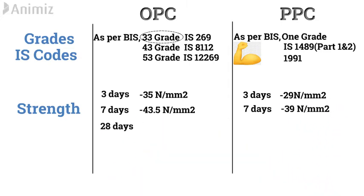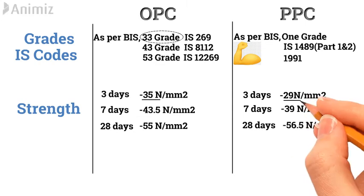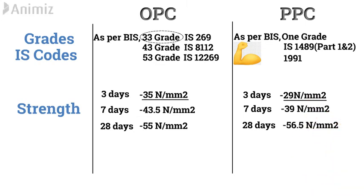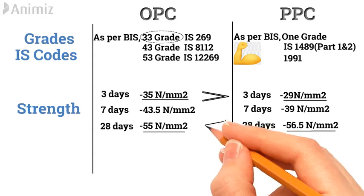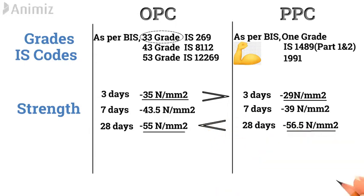In 28 days, OPC achieves a compressive strength of 55 Newton per mm square, whereas PPC achieves a compressive strength of 56.5 Newton per mm square. The initial strength of Ordinary Portland Cement is higher than Pozzolana Portland Cement, whereas the long-term strength of Pozzolana Portland Cement is higher than Ordinary Portland Cement.